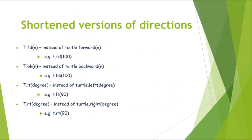Instead of writing forward, backward, left, and right in full, you can also use shortened versions: fd for forward, bk for backward, lt for left, and rt for right. Let us see this with the help of an example in Python.